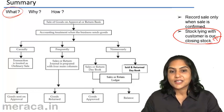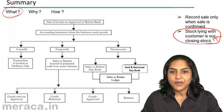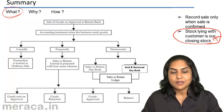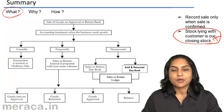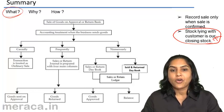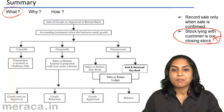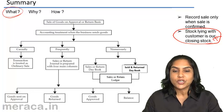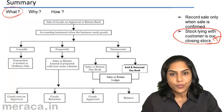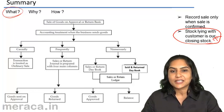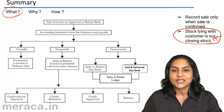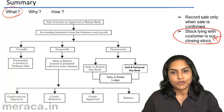When is a sale actually affected? When the customer intimates his approval and tells us he approves of the goods. Or the specified period within which he should have returned the goods is over and he has not returned the goods. Or he indicates by using the goods in some way that he has approved of the sale.